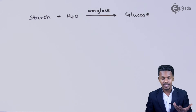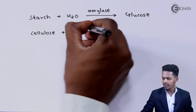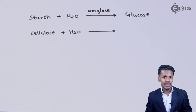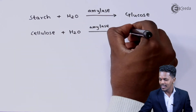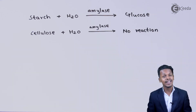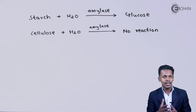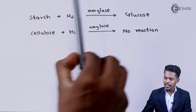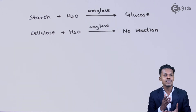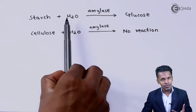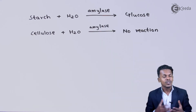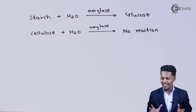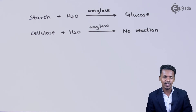Now, if we take another carbohydrate — cellulose — and react it with water in the presence of amylase, the expected product is not obtained. There is no reaction when cellulose reacts with H2O in the presence of amylase. This is because amylase is specifically designed to break down starch molecules in the presence of H2O to give glucose, but it does not work on cellulose. This demonstrates that amylase is very highly specific in nature.